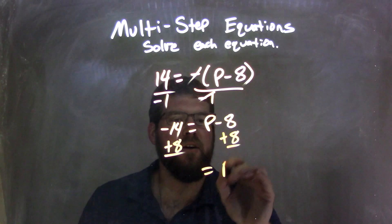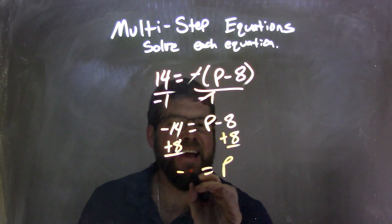I'm left with the 8's canceling here, leaving p, and negative 14 plus 8 is a negative 6.